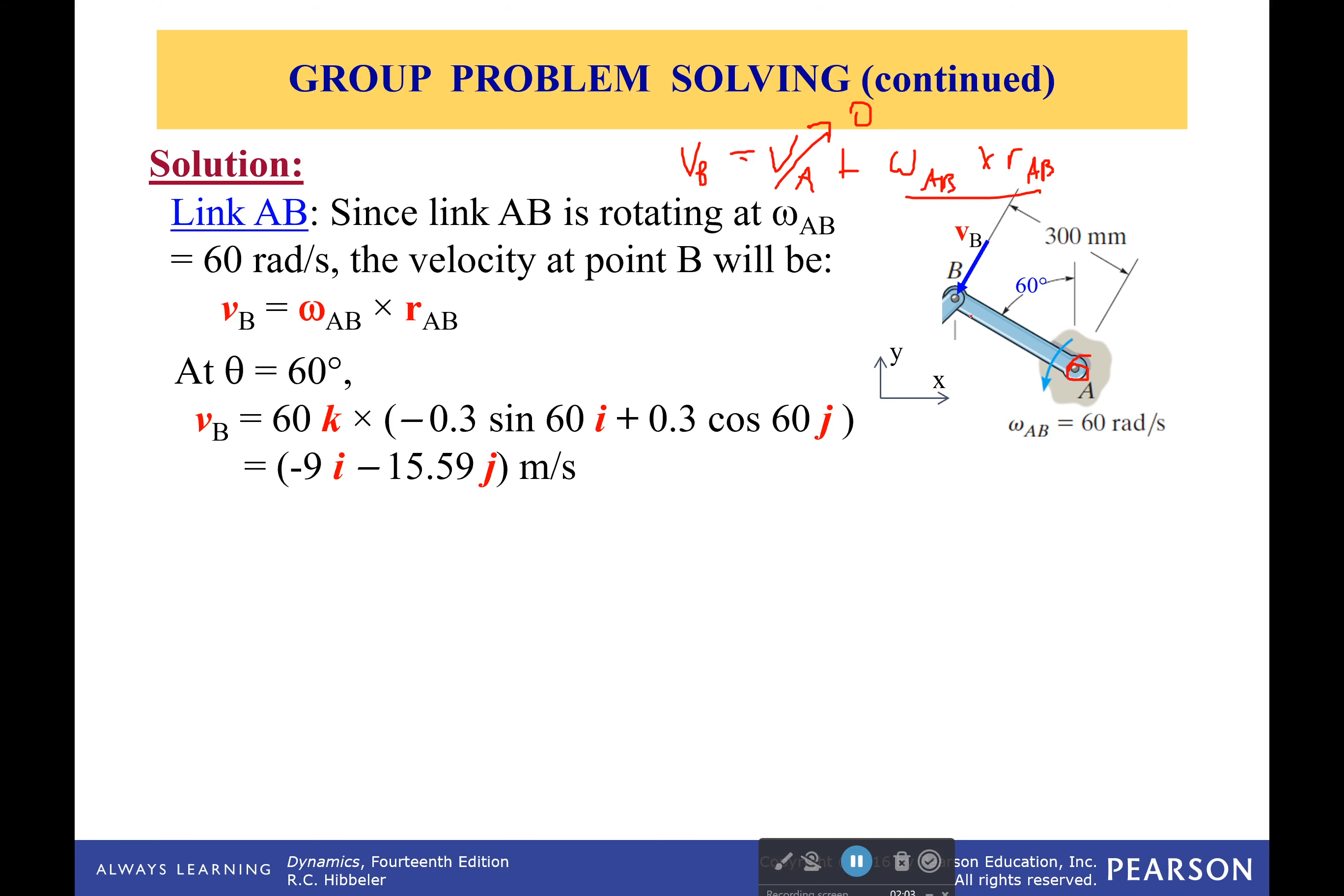So, because this is perpendicular, we don't even have to worry about any angles. But we still can figure out what the magnitude of VB is very simply. It's going to be 60 radians per second times the length, which is going to be 0.3. And so that's 60 times 0.3, which would be 1.8.